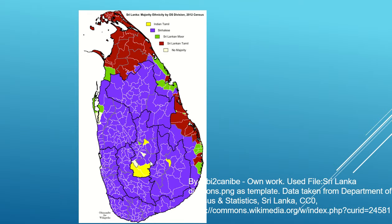Now, what is the major difference between the Indian Tamilians and the Sri Lankan Tamilians? Before we get into the statistics, the picture itself makes it very clear that the Sinhala population, shown in blue, is in the majority, while the rest are in minority.